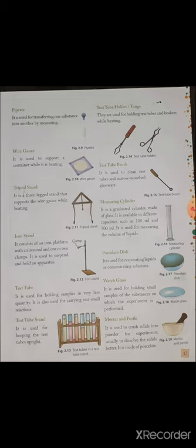Now the iron stand. It consists of iron platform with an iron rod and one or two clamps. It is used to suspend and hold an apparatus. Sometimes in the clamp, we clamp the test tube also. We clamp the burette also. Sometimes we also clamp some thread to do the practicals. So the clamp is also essential in chemistry lab.